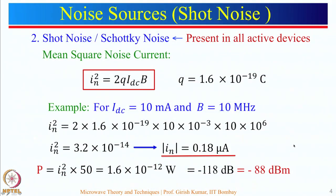That is why the first stage of a low noise amplifier typically does not use a biasing current of 10 mA — it is usually of the order of 1 to 2 mA. If we take 1 mA, In² decreases by a factor of 10, and the noise power also decreases by about 10 dB to approximately −98 dBm. When designing a low noise amplifier, we must ensure the noise power generated by the amplifier is as small as possible.